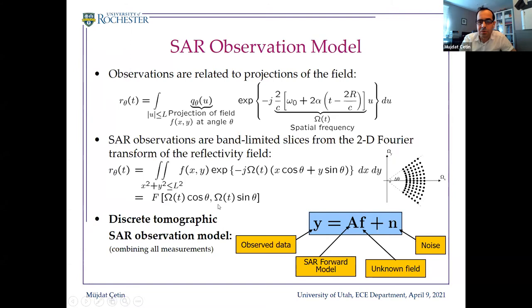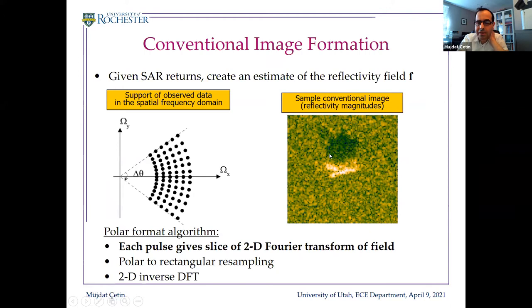Conventional radar imaging observes that the data lies in the two-dimensional spatial Fourier transform domain. As you observe the scene from different angles, the data lies in an annular region in the spatial Fourier domain. Conventional imaging involves interpolating this data to a rectangular grid and then taking a two-dimensional inverse Fourier transform. This is a typical radar image obtained from such processing, showing a vehicle with its metallic parts and an electromagnetic shadow behind it.